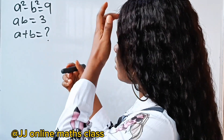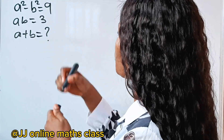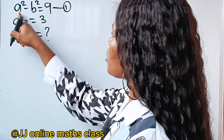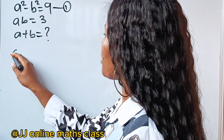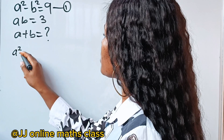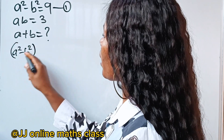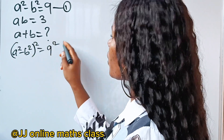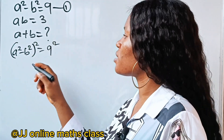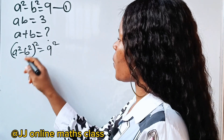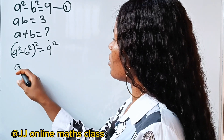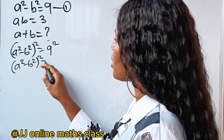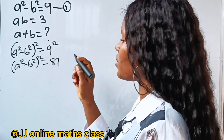To solve this, let's call this equation 1. So, a squared minus b squared — if we should square it, we are going to have 9 squared, right? So, a squared minus b squared, all squared, is equal to 81.